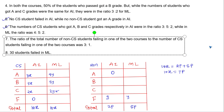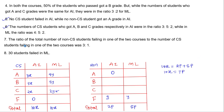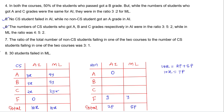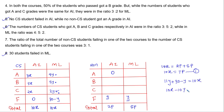Statement 8 says 30 students failed in ML. Of these, Y non-CS students failed in ML, so 30 minus Y CS students failed in ML. The total ML enrollment is 4y + 5y + 2y = 11y for CS, plus (30 - Y) failures. Setting total ML equal to 10x gives us: 10x minus 10y equals 30, so x minus y equals 3. This is equation 2.